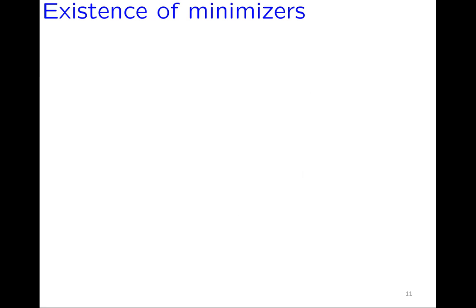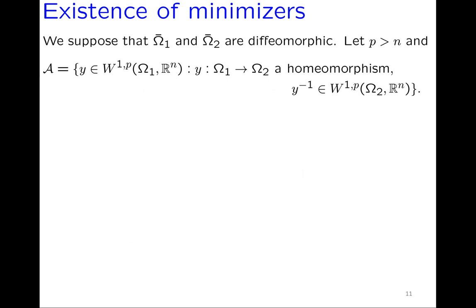The first question is: does this minimization problem have minimizers? We suppose Ω̄₁ and Ω̄₂ are diffeomorphic, take p > n, and work in W^{1,p}. By Sobolev embedding everything is continuous up to the boundary. The admissible set 𝒜 consists of W^{1,p} maps y that are homeomorphisms from Ω₁ onto Ω₂ with inverse also in W^{1,p}(Ω₂).